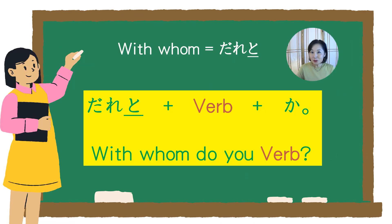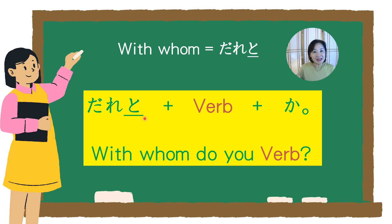If you want to ask 'with whom do you do those activities,' the question word is 誰と. 誰 means 'who,' と means 'with.' So: 誰と日本に行きますか? means 'With whom do you go to Japan?' And 誰と映画を見ますか? means 'With whom do you watch the movie?'